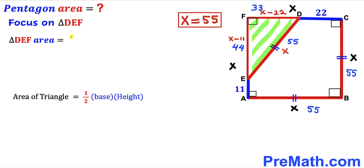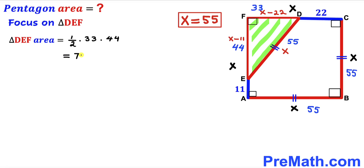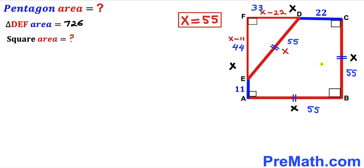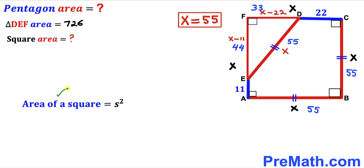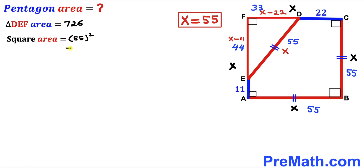Multiplying those values, the area of triangle DEF gives us 726 square units. Now we calculate the area of square ABCF using the formula: area equals S squared, where S is the side length. The side length of the square is 55 units, so the square area equals 55 squared, which equals 3025 square units.